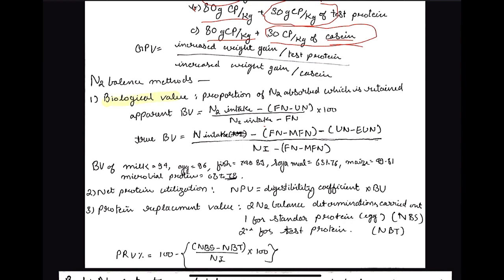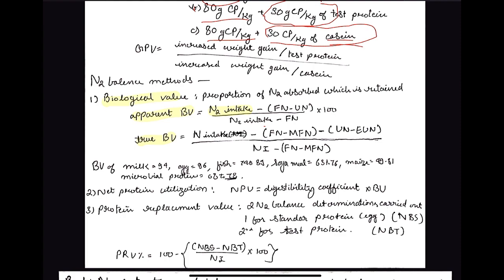The first method in this category is Biological Value (BV), which is the proportion of absorbed nitrogen that is retained. There are two types: apparent biological value and true biological value. In apparent biological value, we do not account for the mucosal cells shed in the intestine into the feces, nor for endogenous urinary nitrogen.